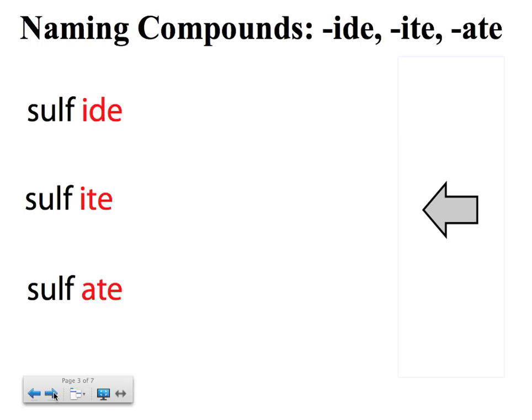Well, let's look at a good example here. Okay, we have sulfide, sulfite, and sulfate. So, the 'sulf' tells you that all of them contain sulfur.